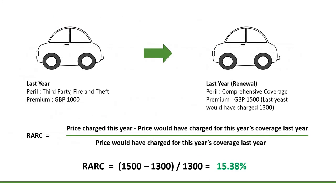Moving to the next slide, let me explain how RARC is calculated. Here we have an example with a car. Last year's premium for this car was 1,000 GBP and we were covering only third-party, fire and theft. But this time during the renewal, the carrier is providing comprehensive coverage with a premium of 1,500 GBP. A comprehensive car insurance is an extensive motor insurance plan that covers the insured person against both own damage and third-party liability — including accidents, theft, fire, natural calamity, and everything.